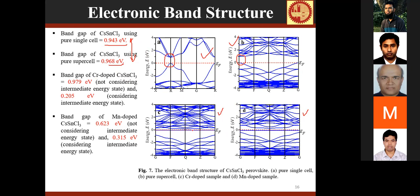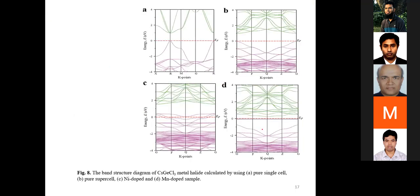The band gap for chromium-doped cesium germanium chloride is not a direct band gap. Without considering the intermediate energy state, one band gap value is obtained; considering the intermediate state, the band gap is smaller. For manganese-doped cesium germanium chloride the band gap is also indirect, with one value without considering the intermediate state and a different value when the intermediate state is included.